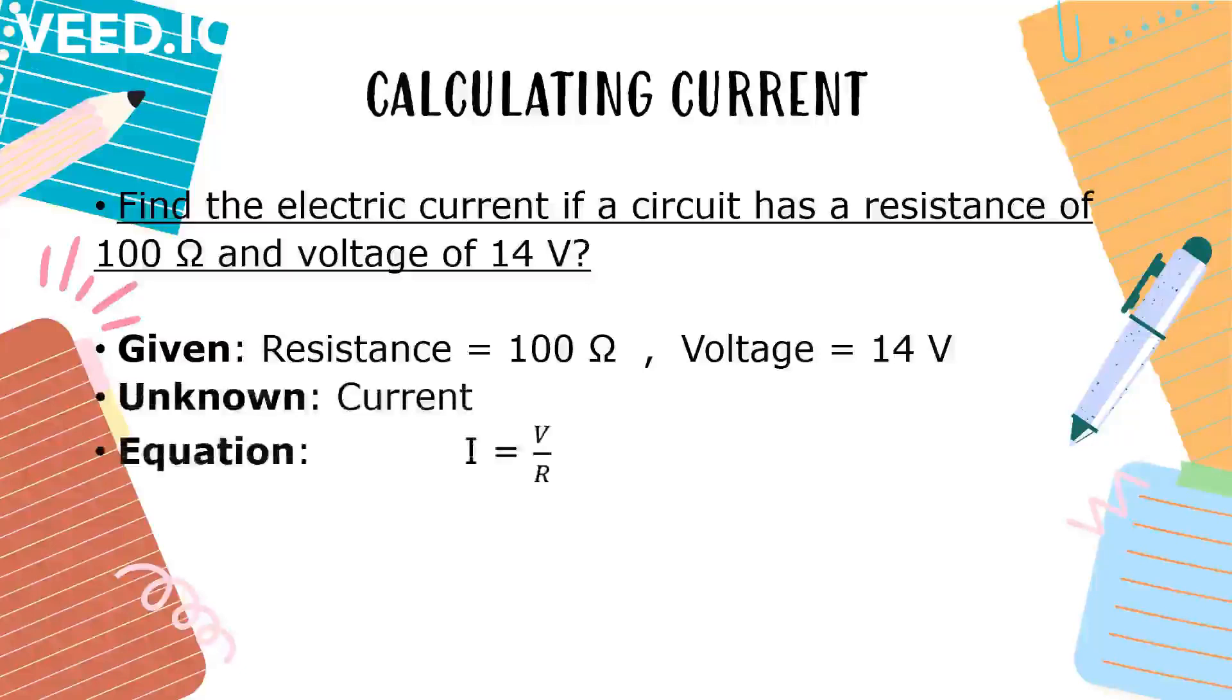The equation to be used is, I is equal to V divided by R. We are going to substitute the given values from the equation. Solution, I is equal to 14 volts divided by 100 ohm. And the answer is, I is equal to 0.40 amperes.